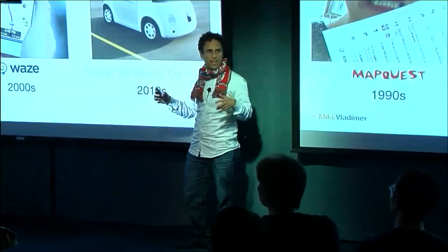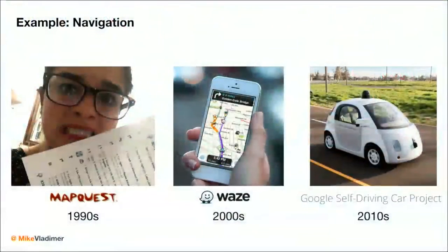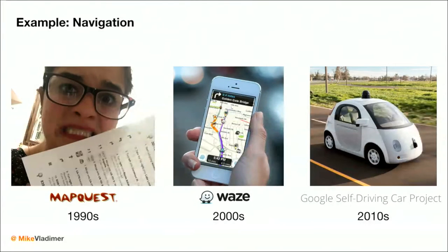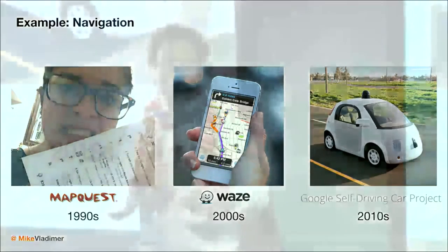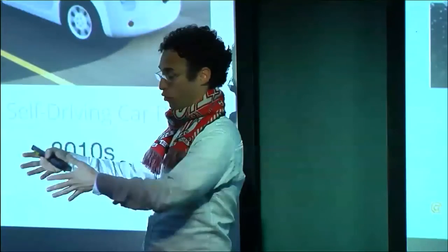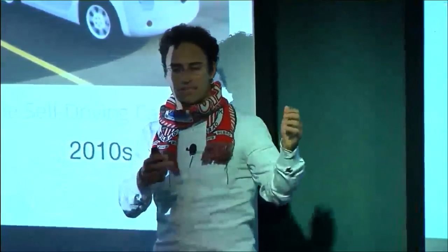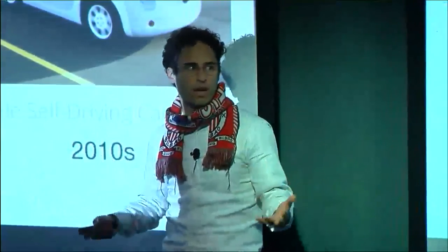Here's an end-to-end example. Before the 1990s, if you wanted navigation, you had to solve the problem yourself. With MapQuest, the internet could tell you how to get where you wanted to go, but you couldn't take the information with you — you still had to print out the directions. Then in the 2000s, smartphones and Google Maps let us take the information with us, but we were still the intermediary — humans still had to take information from the internet and transfer it to control the car. That's what self-driving cars are all about: cutting out the human intermediary so the car can communicate directly with the internet.